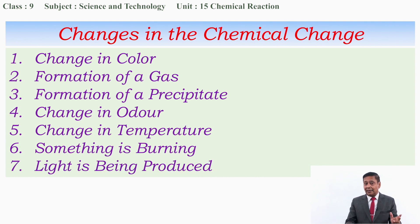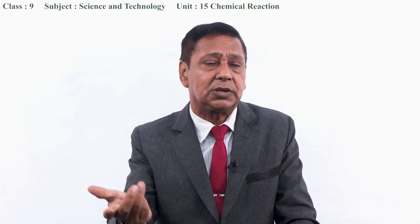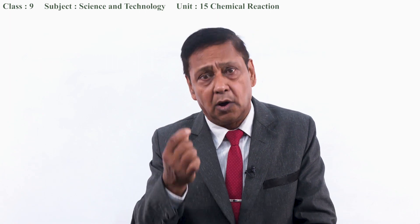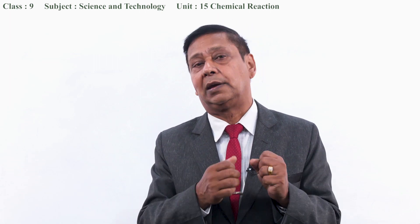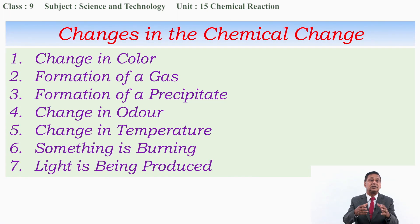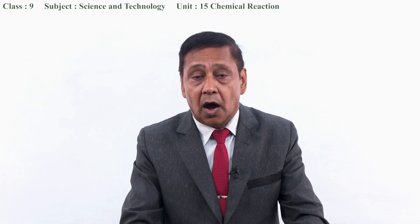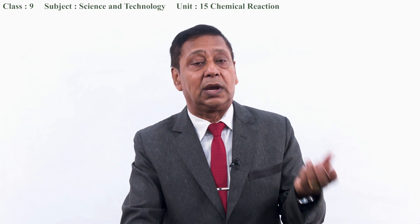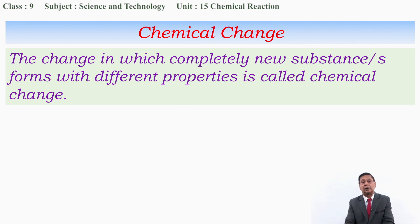Also, light may be produced in certain chemical changes — when a cell is connected to a bulb, the bulb gives us light; when paper is burned, burning paper gives us light. Some of these changes may occur in a certain chemical change, but not all of them occur in every change. The change in which completely new substance or substances form with different properties is called chemical change.